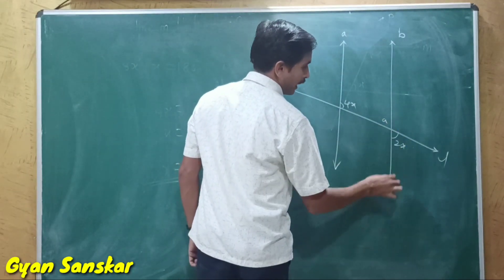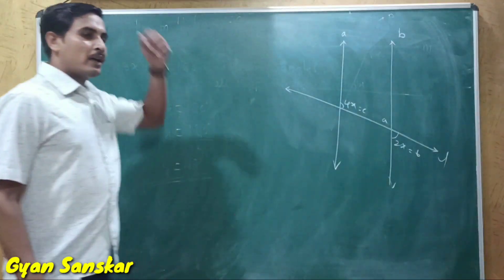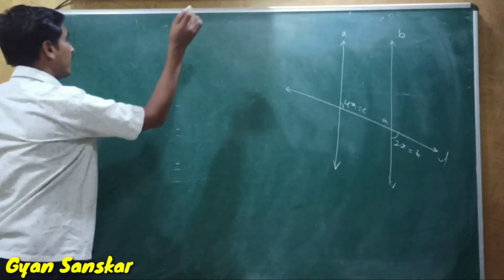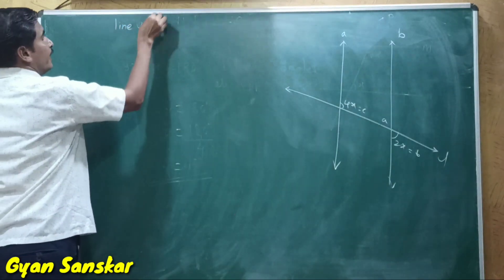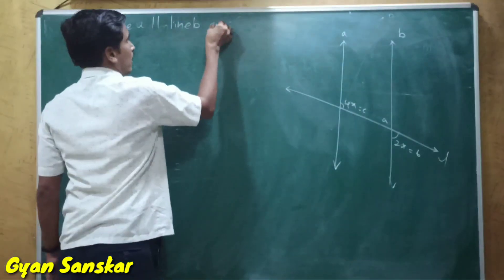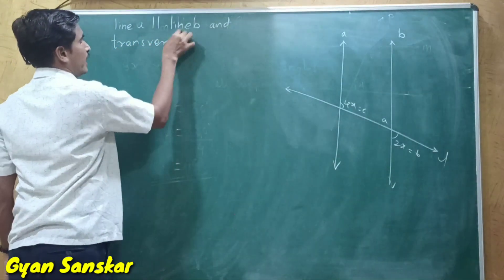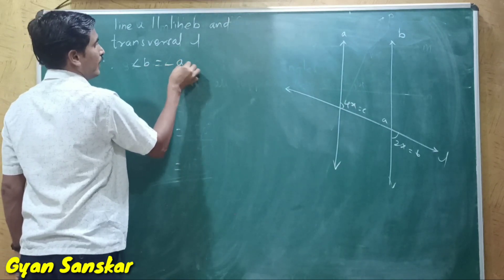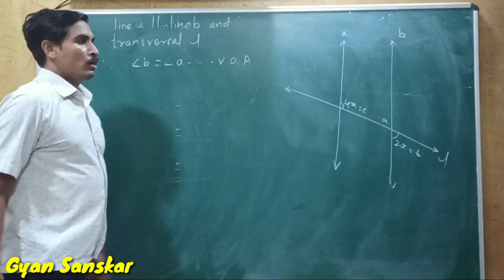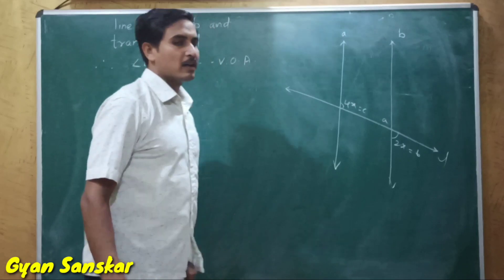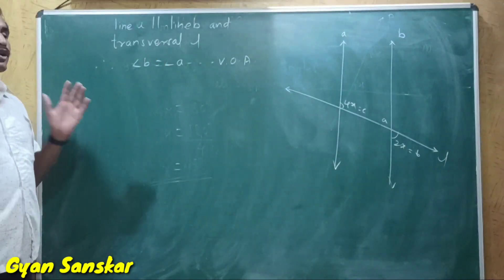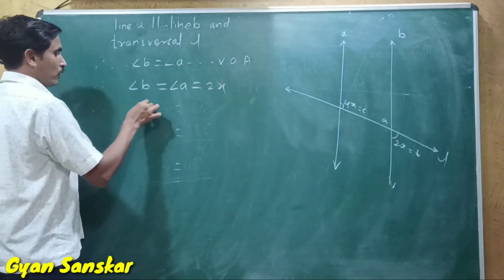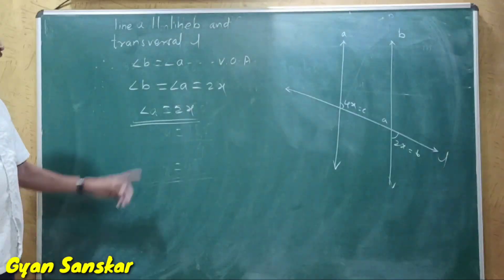We will name the angles: this angle as A, this angle as B, and this angle as C. If you see here, angle A and angle B are both vertically opposite angles. So we write: line A is parallel to line B and transversal yam. Therefore, angle B is equal to angle A because they are vertically opposite angles, and vertically opposite angles are congruent. Therefore angle B equals angle A equals 2x, so angle A is equal to 2x.